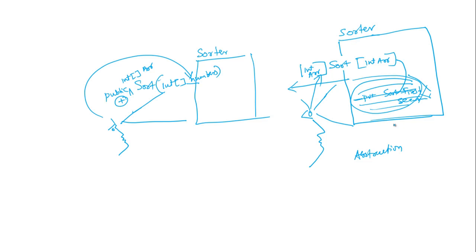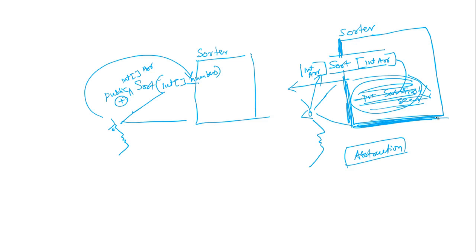What you can see here is abstraction in action. The creator of the Sorter class has given a proper abstraction by only exposing the sort method and choosing to make the private methods private — there could be 100 methods, all private. You can also see encapsulation here — things are encapsulated inside the class, which is why a person looking at the class from outside is not able to see the private methods and can only see the public methods that are exposed. That's the explanation for abstraction.